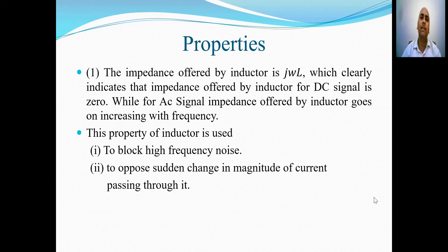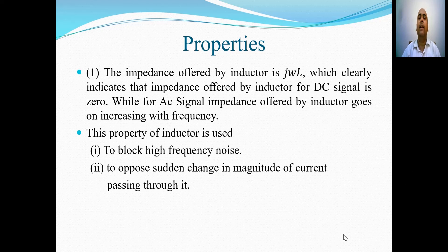That is, a DC signal passes as it is through the inductor. However, for an AC signal, as the frequency increases, the angular frequency also increases, and when multiplied by the inductance, it gives the impedance offered by the inductor. From this relation, it is evident that as frequency increases, the impedance also increases. That is, inductors do not allow a high-frequency signal to pass through, and this property is used to block high-frequency noise.